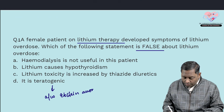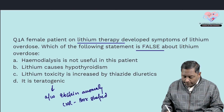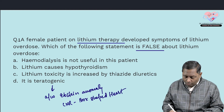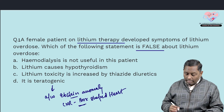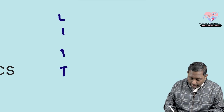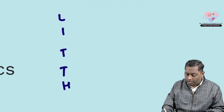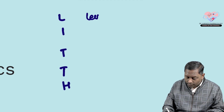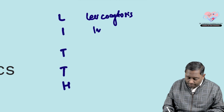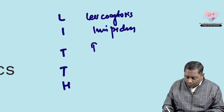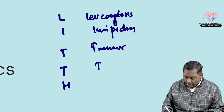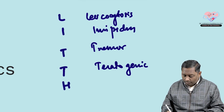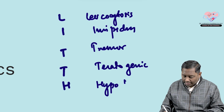In Ebstein anomaly, on chest X-ray we get a box-shaped heart. I always ask students to remember: 'tin se banta hai box' — tin gives rise to box. Apart from that, the side effects of lithium are remembered by the mnemonic LITH: Leukocytosis, Insipidus (diabetes insipidus), Tremor, and Hypothyroidism. It is also highly teratogenic, causing Ebstein anomaly.